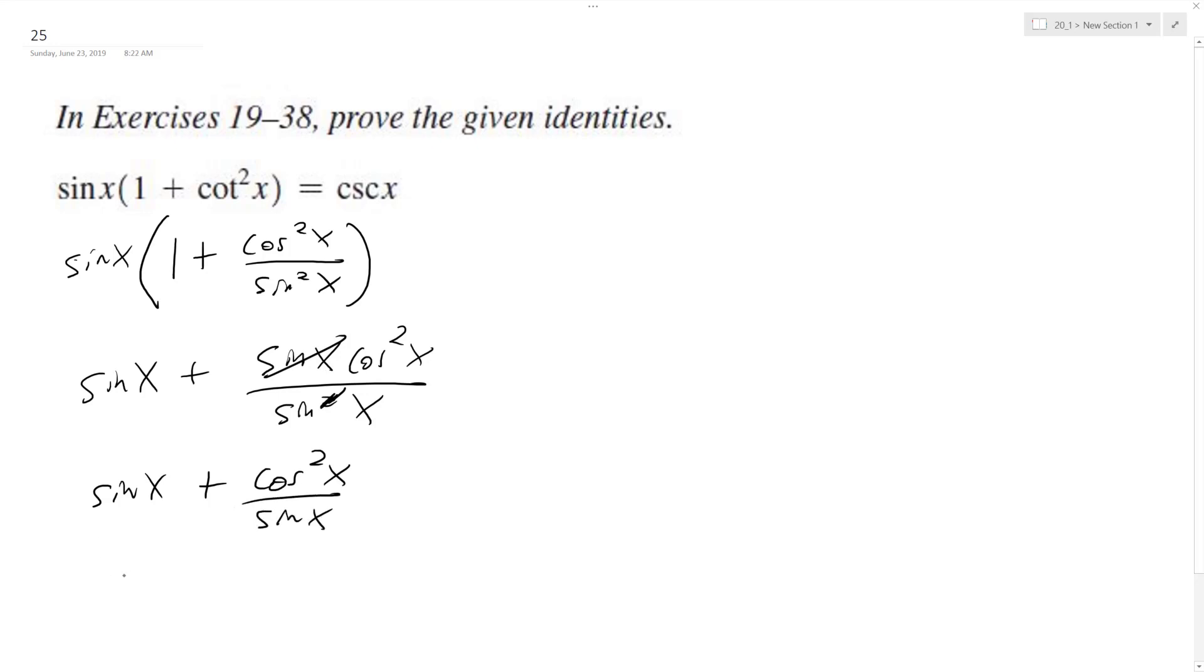And then if we get a common denominator, we end up with sine squared x plus cosine squared x all over sine x.